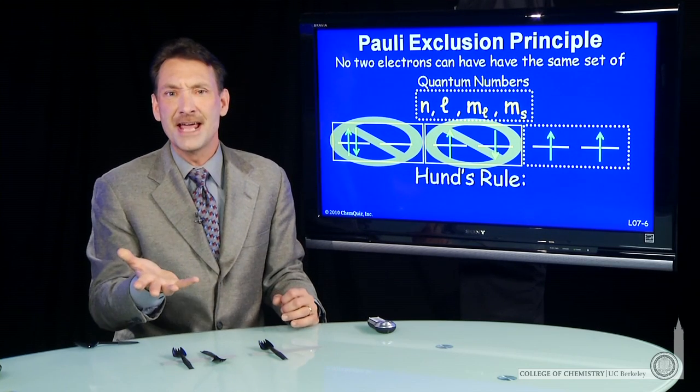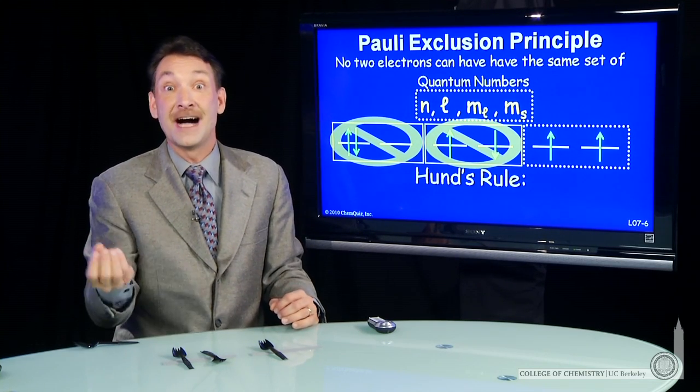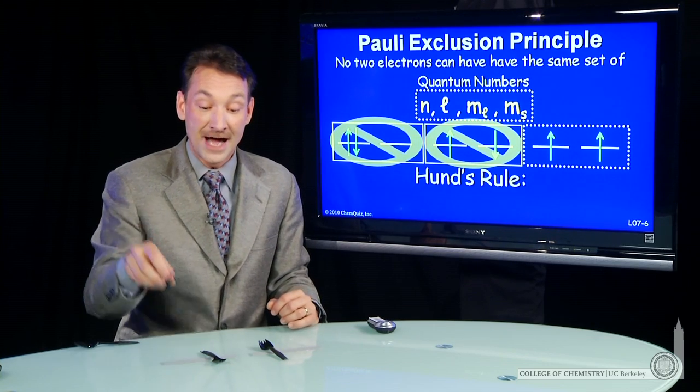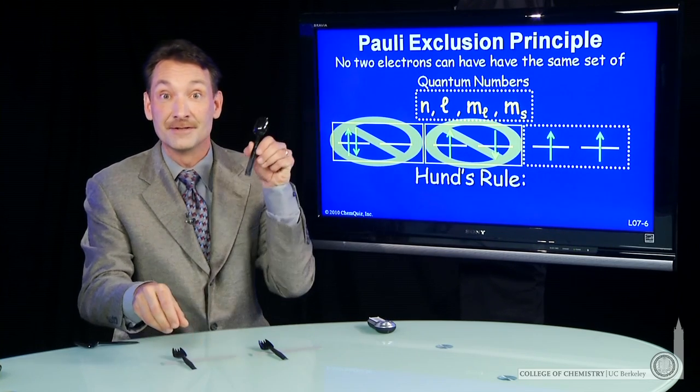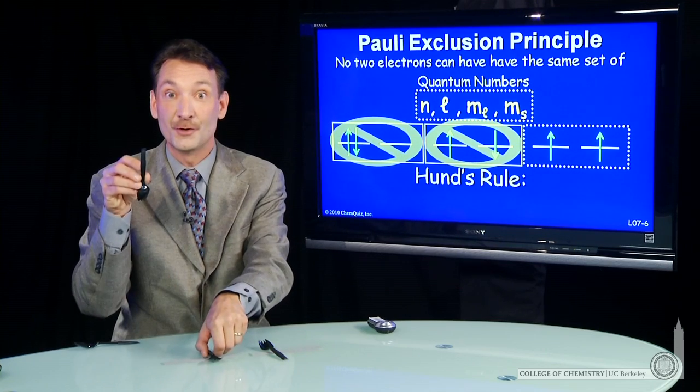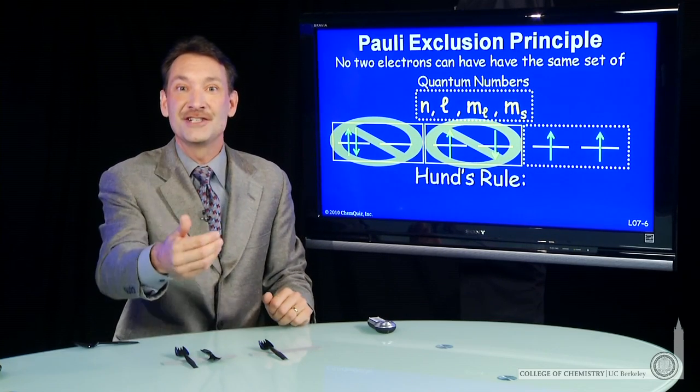You can think of that m sub s quantum number as a time quantum number. It says I'll occupy the same space, the same orbital, but I'll do it at different times. m sub s is different, so we can both sit there. We just won't see each other in time.